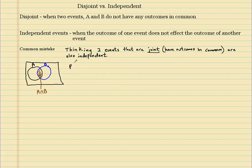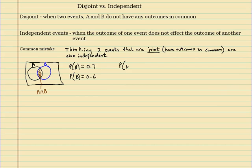I'm going to say the probability of A is 0.7 and the probability of B is 0.6. These can't be disjoint because if you add these up, they're more than one, so there's some portion of both that overlap. But a common mistake is to look at these joint events and just assume that A and B are independent.